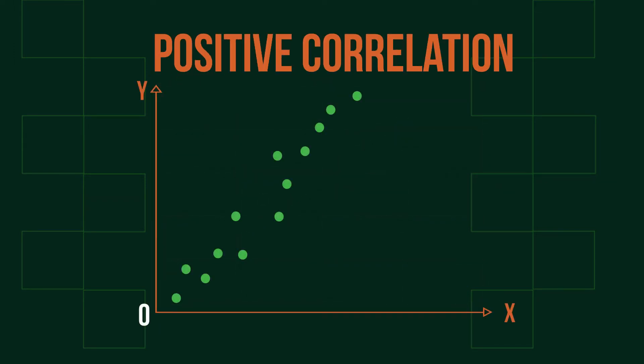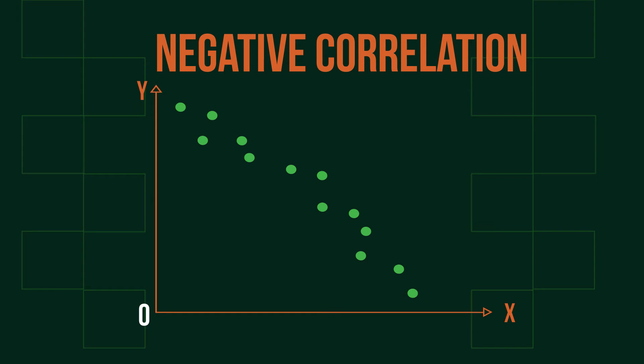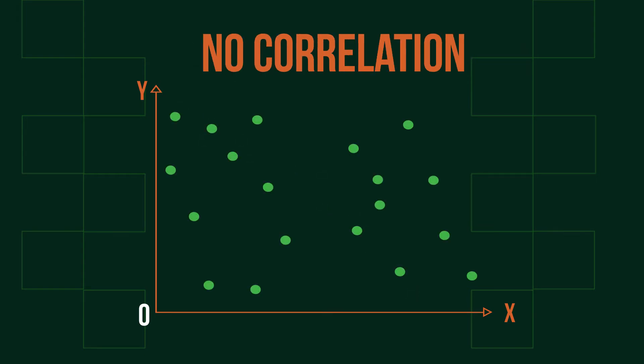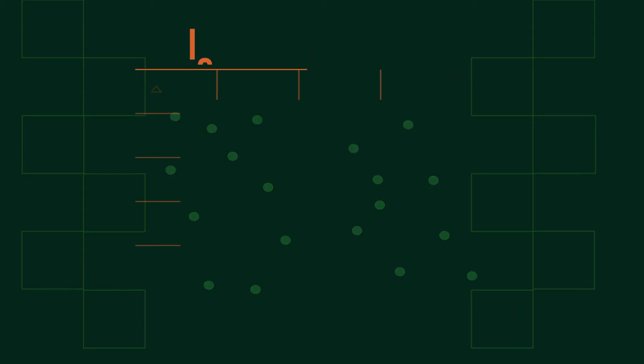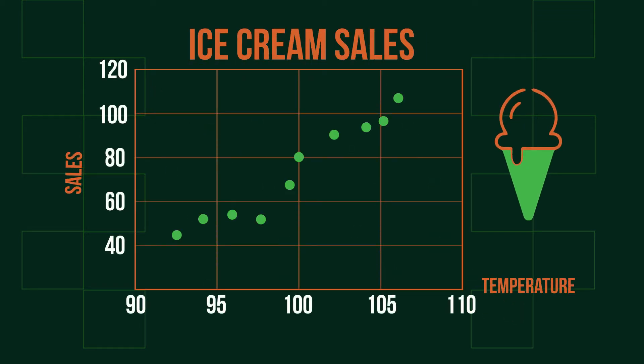Variables can be positive, negative, or not correlated. If increasing one variable causes the other variable to increase as well, for example, ice cream sales and temperature, the two are positively correlated.